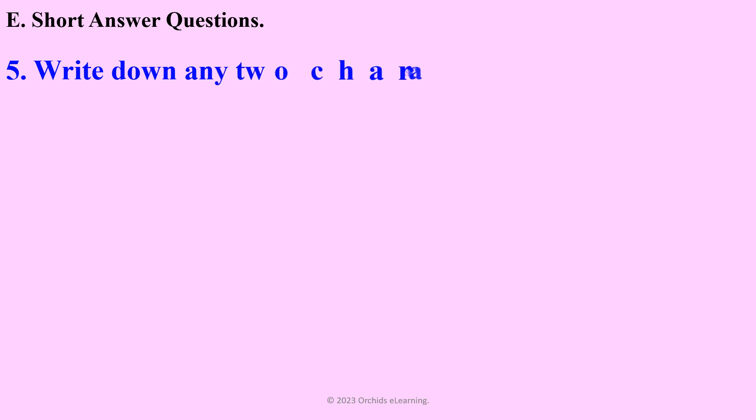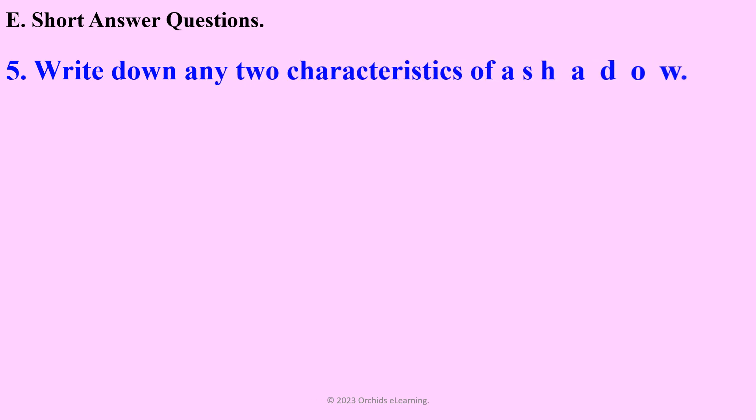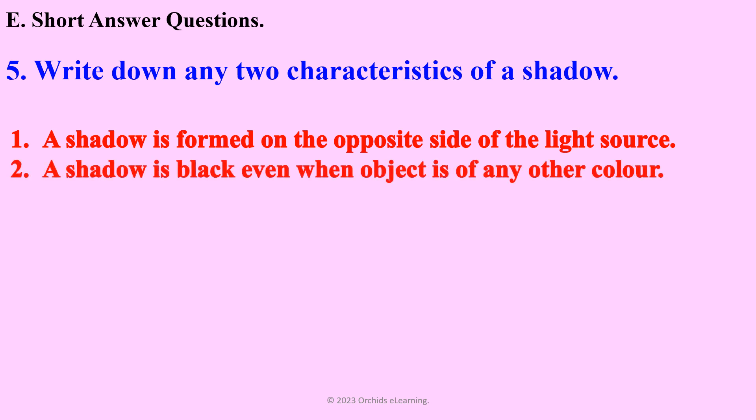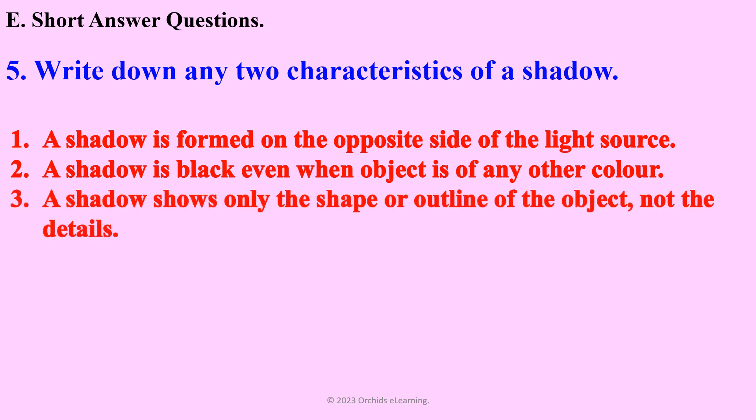Write down any two characteristics of a shadow. A shadow is formed on the opposite side of the light source. A shadow is black even when the object is of any other color. A shadow shows only the shape or outline of the object, not the details.